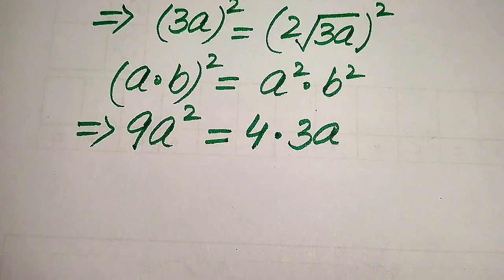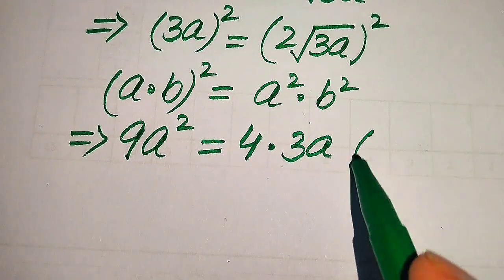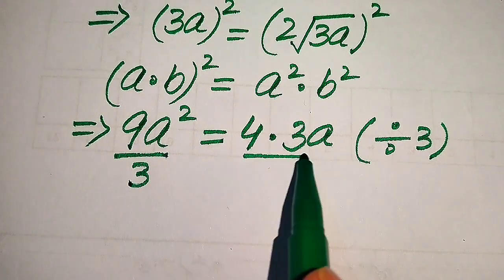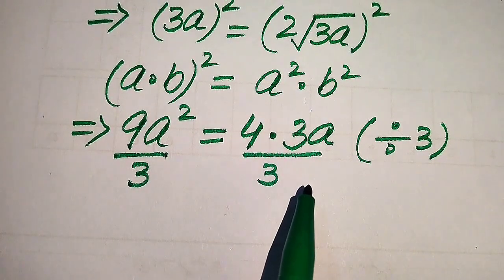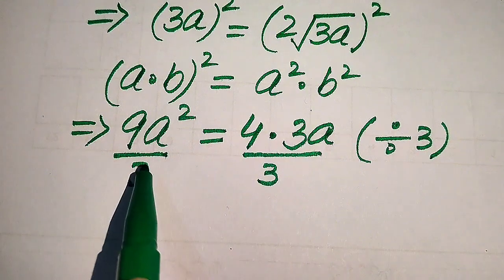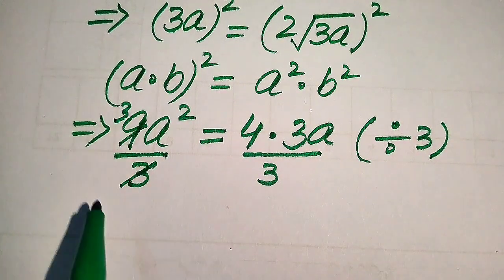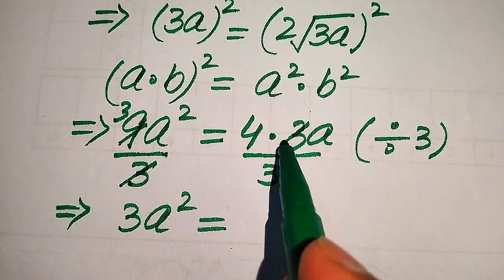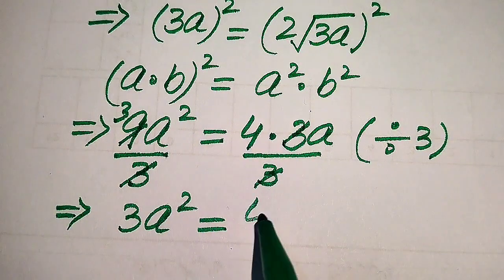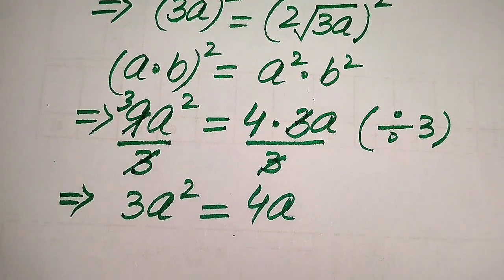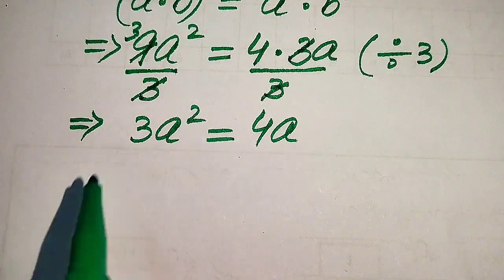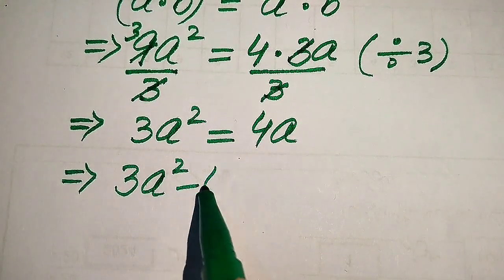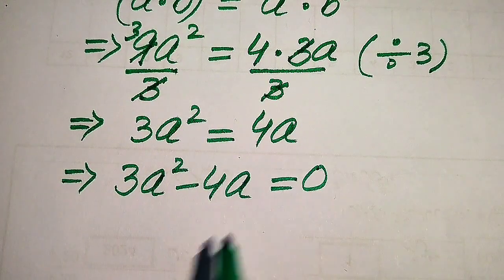In the next step we divide both sides by 3. When we divide both sides by 3, the 9a² divided by 3 gives 3a², and 4 times 3a divided by 3 gives 4a. So we get 3a² equals 4a. Moving 4a to the left hand side gives us 3a² minus 4a equals 0.